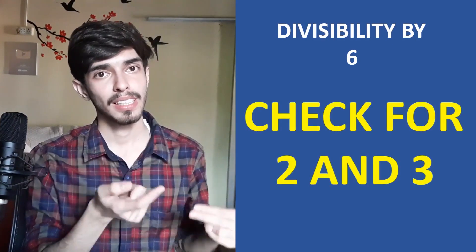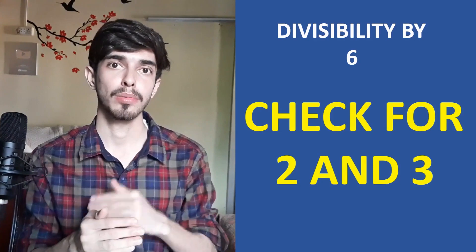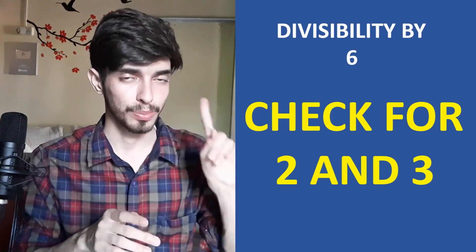Divisibility test for 6 is extremely simple: check for both 3 and 2. If it's divisible by both, then it's divisible by 6. For our prime-number questions, we don't even need to test for 6 specifically — if a number passes the test for just 3 or just 2, it's already not prime.